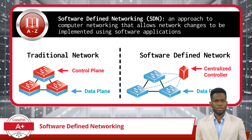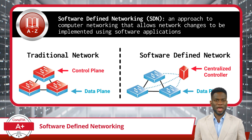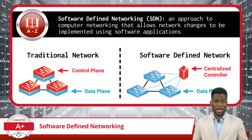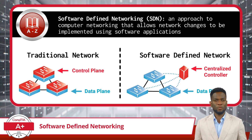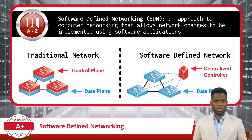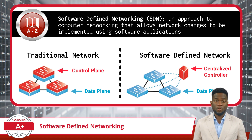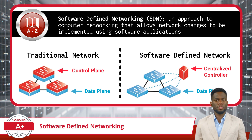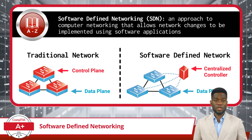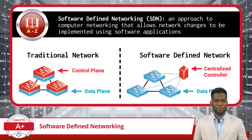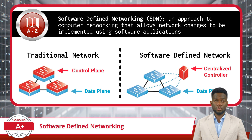As for the data plane, this is the part of the network that is actually responsible for moving data packets from one point to another. In other words, it's the part that does the work of transferring data based on the instructions it receives. In traditional networks, the data plane is integrated into the network devices and is responsible for both forwarding data and making decisions about where to send it. In software-defined networking, however, the data plane is simplified and only focuses on the forwarding of data based on the instructions it receives from the centralized control plane.